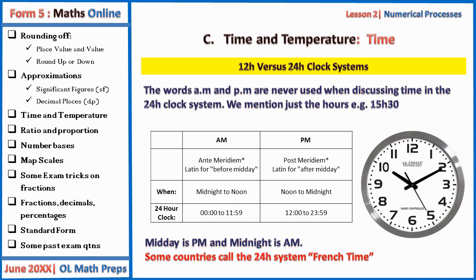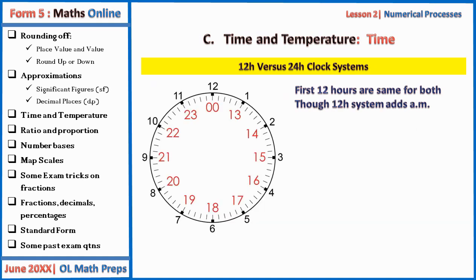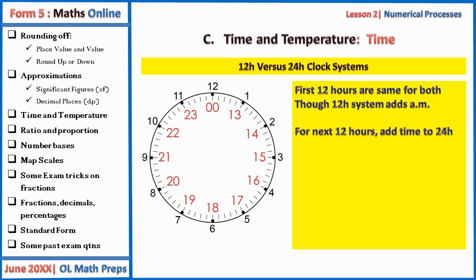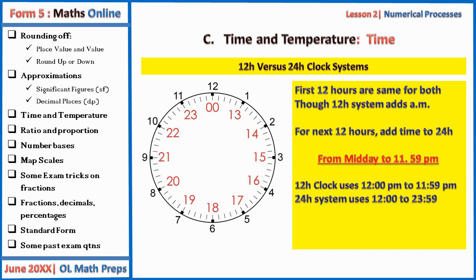Note that midday is pm — that is 12:00 — and midnight is am, when talking about the 12-hour clock system. AM stands for ante meridian and PM for post meridian, as you already know from geography. Some countries call the 24-hour clock system 'French time.' The first 12 hours are the same for both systems. For the next 12 hours, from the 13th hour, we add time to have the corresponding time on the 24-hour clock system.